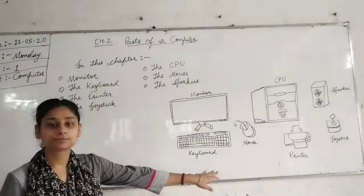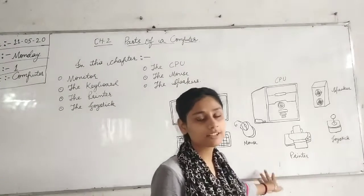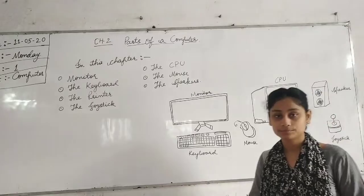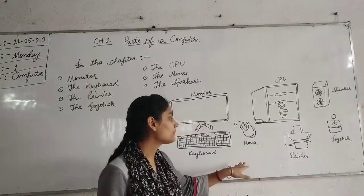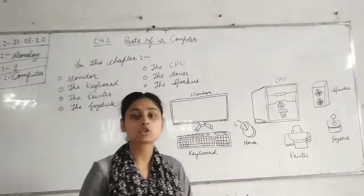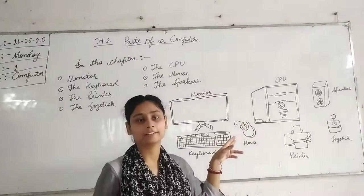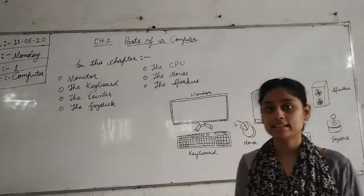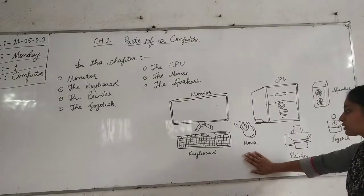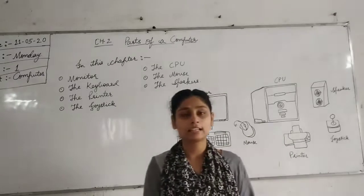Mouse looks like a real mouse and it even has a tail. It has 2 or 3 buttons on it — a left button, a right button, and a scroll wheel. It is a pointing device used to point on the screen. The mouse is kept on a mousepad, which is the seat of the mouse.